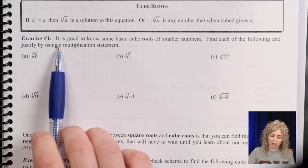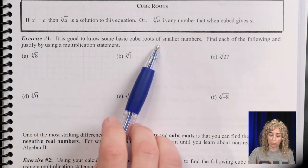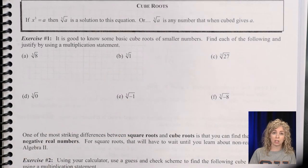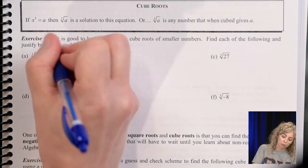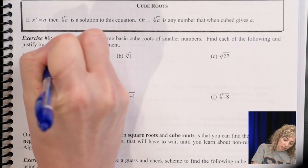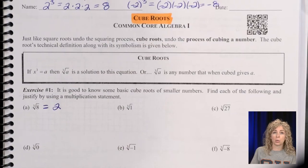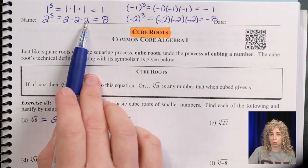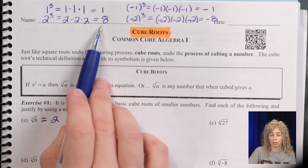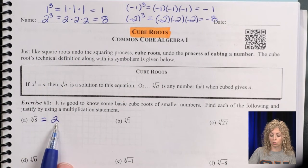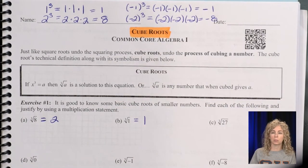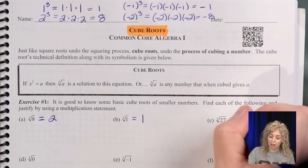Exercise 1 says it's good to know some basic cube roots of smaller numbers. Find each of the following and justify by using a multiplication statement. So we just did this above. We're just going to say this is 2, because we've already shown the multiplication here. It's because 2 × 2 × 2, or 2³ is 8.